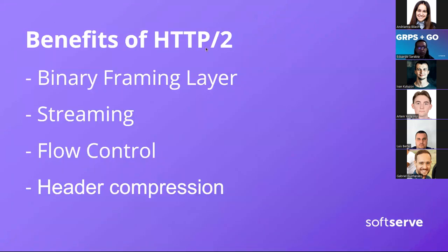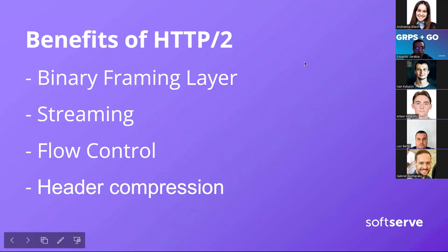Working with HTTP/2 has a lot of benefits. One is the binary framing layer — unlike HTTP/1, requests and responses are divided into small pieces of messages and framed in binary format, which improves performance. There is also streaming: HTTP/2 supports bidirectional full-duplex streaming, where the client and server can send messages in any order. HTTP/2 also implements flow control, enabling detailed control of the data in-flight.